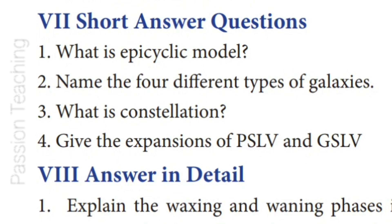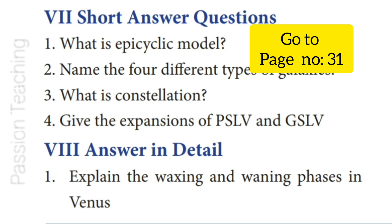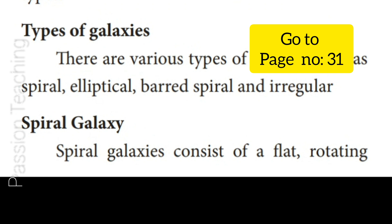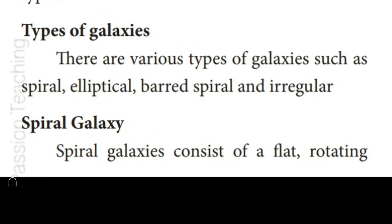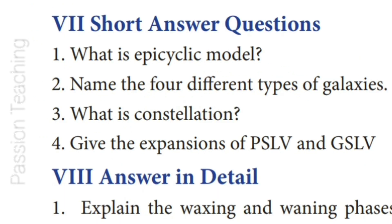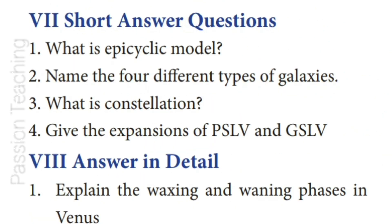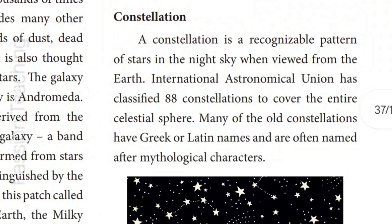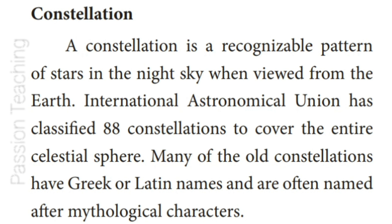Question 2: Name the four different types of galaxies. Answer from page 31: There are various types of galaxies such as Spiral, Elliptical, Barred Spiral, and Irregular. Question 3: What is a Constellation? Answer from page 33: A constellation is a recognizable pattern of stars in the night sky when viewed from the Earth.